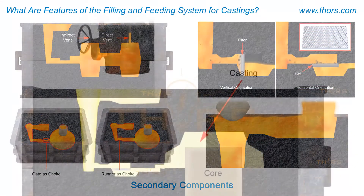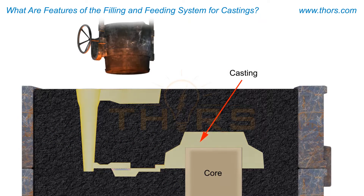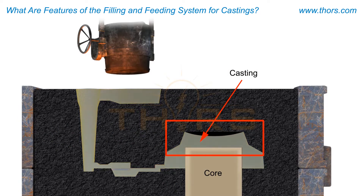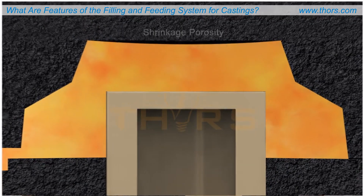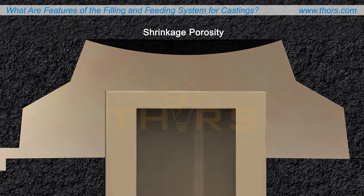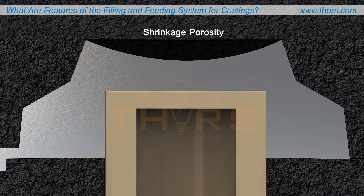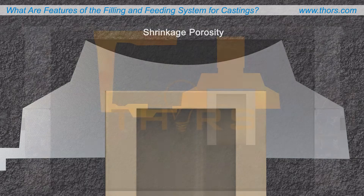Once the casting cavity is filled completely, the metal begins to solidify. As the molten metal solidifies, it undergoes a volumetric reduction, resulting in shrinkage porosity. Shrinkage porosity manifests itself as depressions on the surface of the casting or as voids inside the casting.